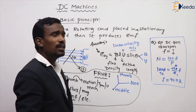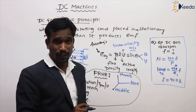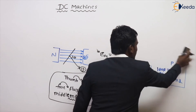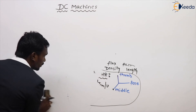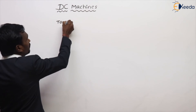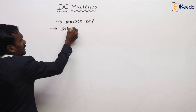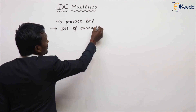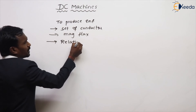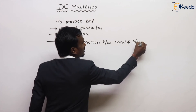The magnitude of induced EMF is given by Faraday's law and the direction by Fleming's right-hand rule. This is simply the basic principle of the DC Generator. In any machine, to produce EMF we require three basic things: one is a set of conductors, second is the magnetic flux, and third is the relative motion between conductors and the flux.